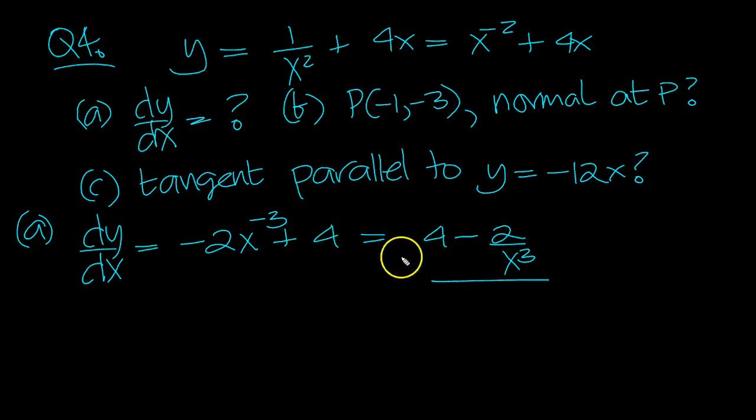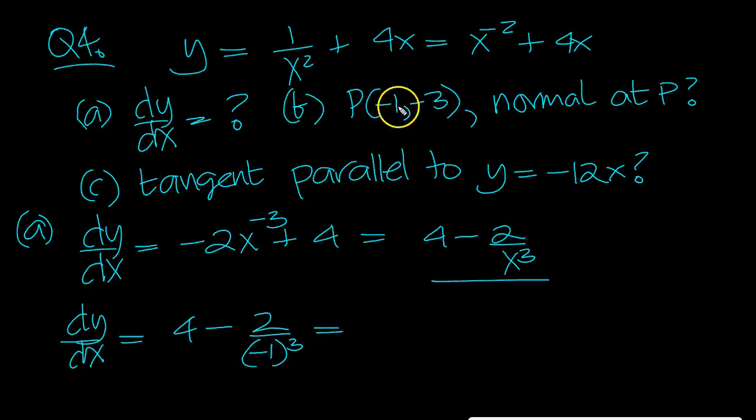So the normal at this point on the curve, dy/dx is equal to 4 minus 2 over (-1) cubed. When x is minus 1, this is minus, so that's a plus 6.